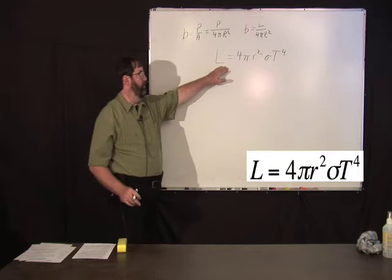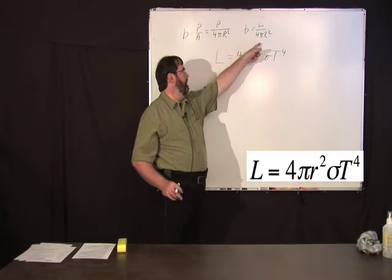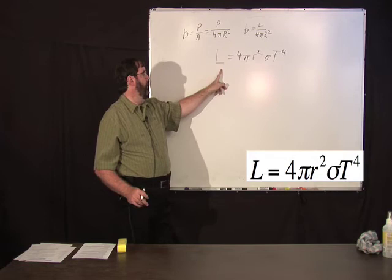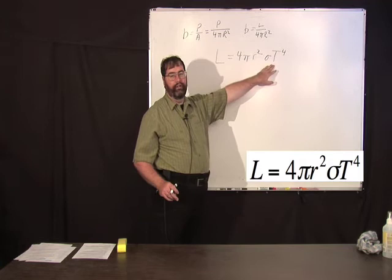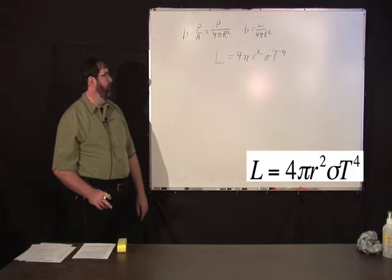if you know the luminosity and you know the distance, let's say, you know the brightness and you know the distance, you can figure out the luminosity. You can figure out from the spectral measurement what this t is, so you can actually figure out the radius of the star from this equation.